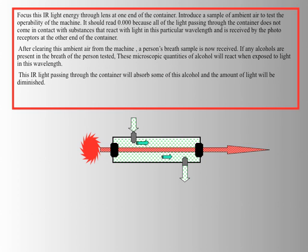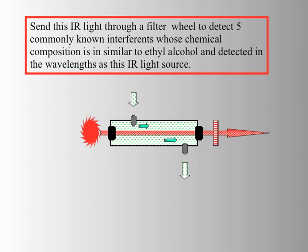With the alcohol sample in there, the machine does some calculations. Because we know a baseline measurement for a sample without alcohol, and then one with, the machine can do some simple math.